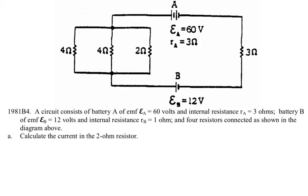This is an AP Physics 2 problem from the 1981 AP exam. They give you a circuit that consists of battery A with an EMF of 60 volts and internal resistance of 3 ohms, and battery B with an EMF of 12 volts and internal resistance of 1 ohm, along with four resistors connected as shown in the diagram. Calculate the current in the 2 ohm resistor.